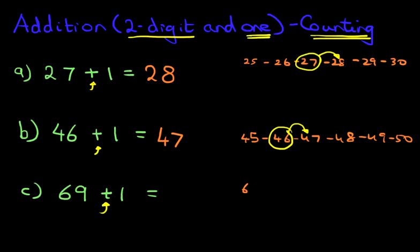Well, again, we can just start counting from 65, 66, 67, 68, 69, 70. What number do we have in the question? We have 69. So what number comes after 69? It is 70.